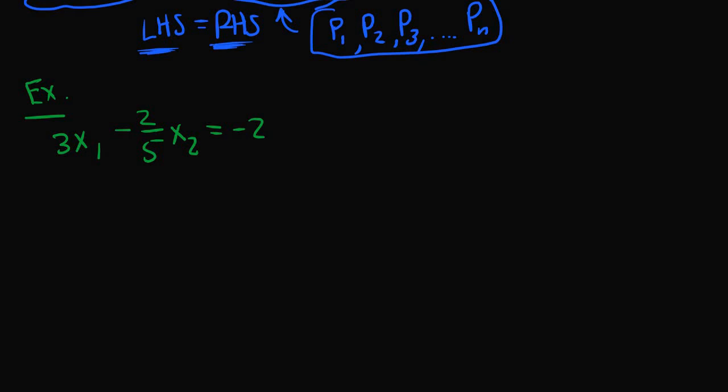So since we only have two variables, x₁ and x₂, and only one equation, what we could do is solve for one of the variables in terms of the other. So let's just solve for x₁ in terms of x₂.